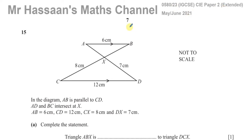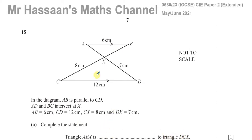This question is about similarity. It says in the diagram AB is parallel to CD, and AD and BC intersect at X. AB equals 6 cm, CD equals 12 cm, CX equals 8 cm, and DX equals 7 cm. It says complete the statement: triangle ABX is blank to triangle DCX. They are similar triangles.